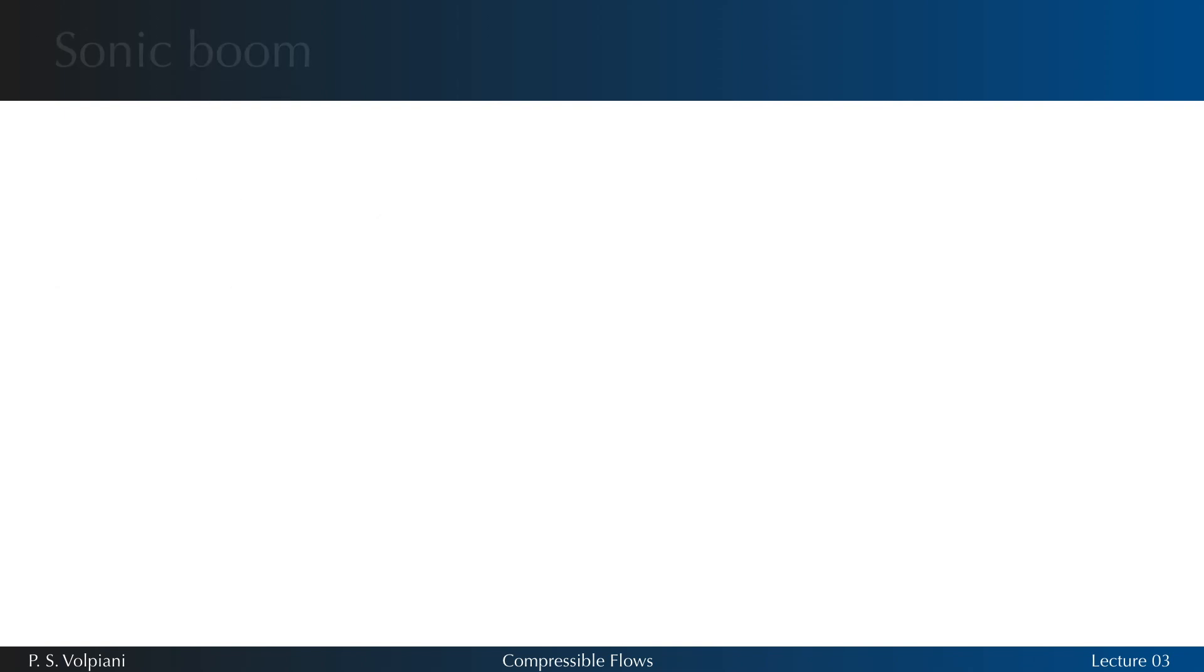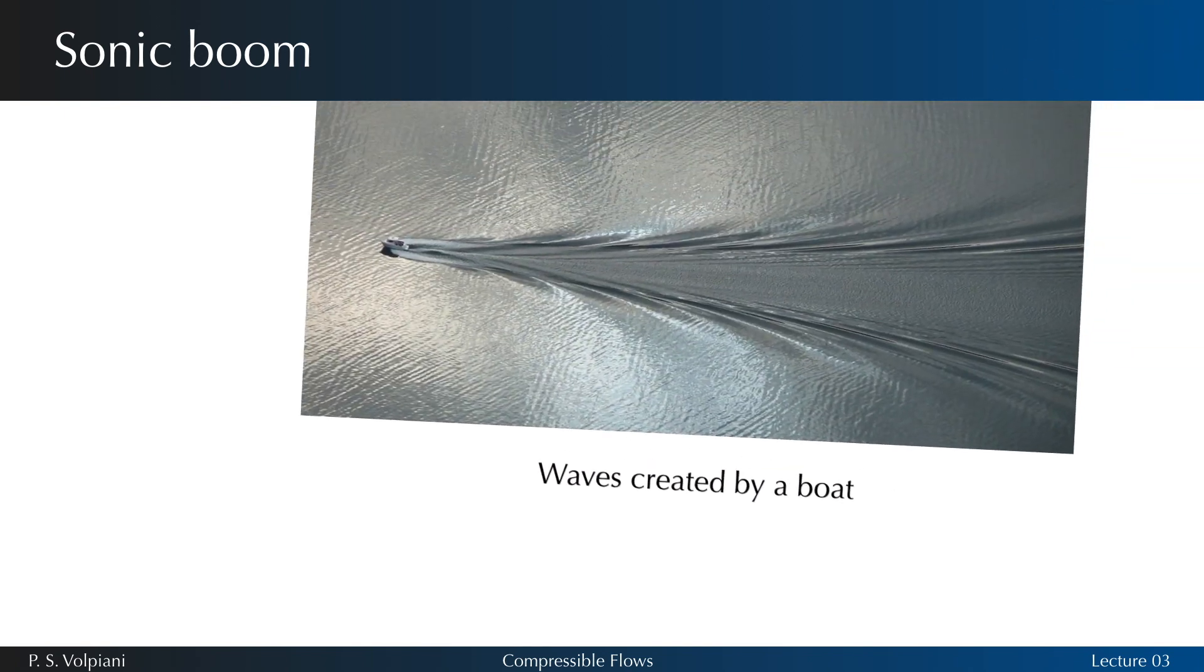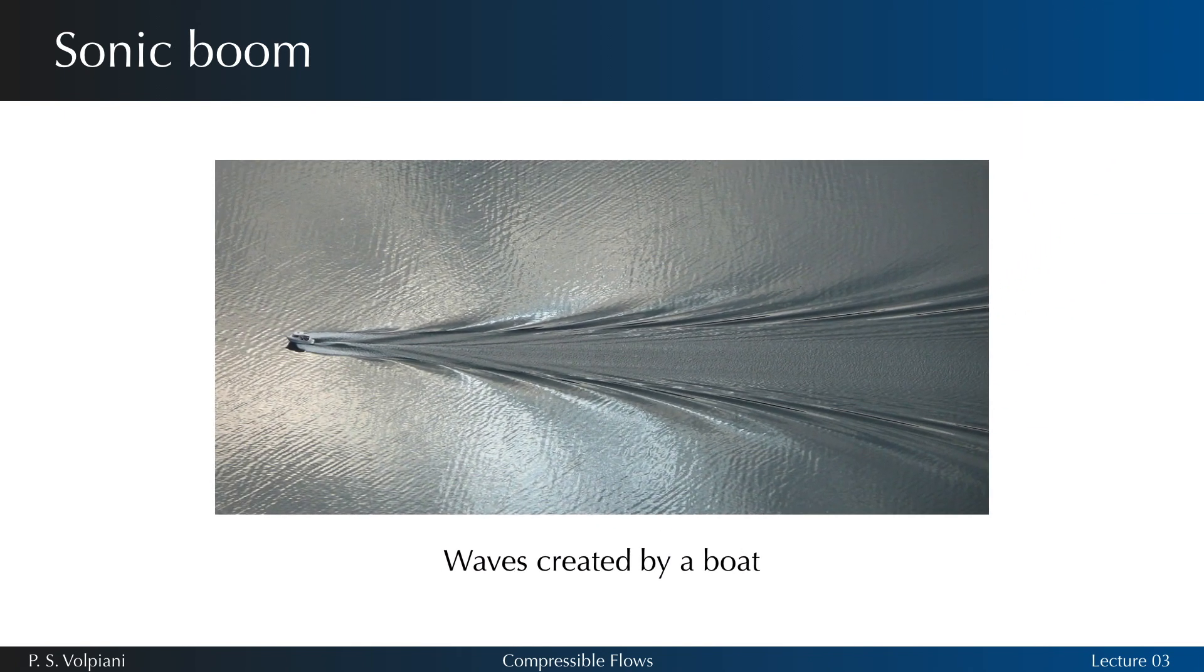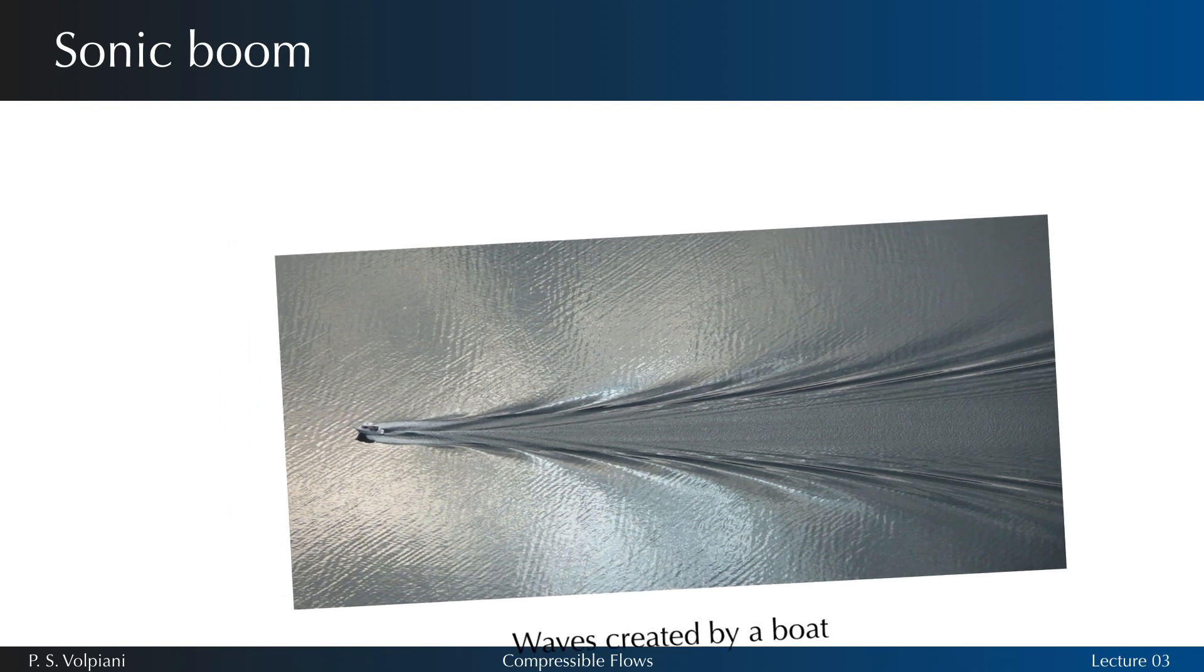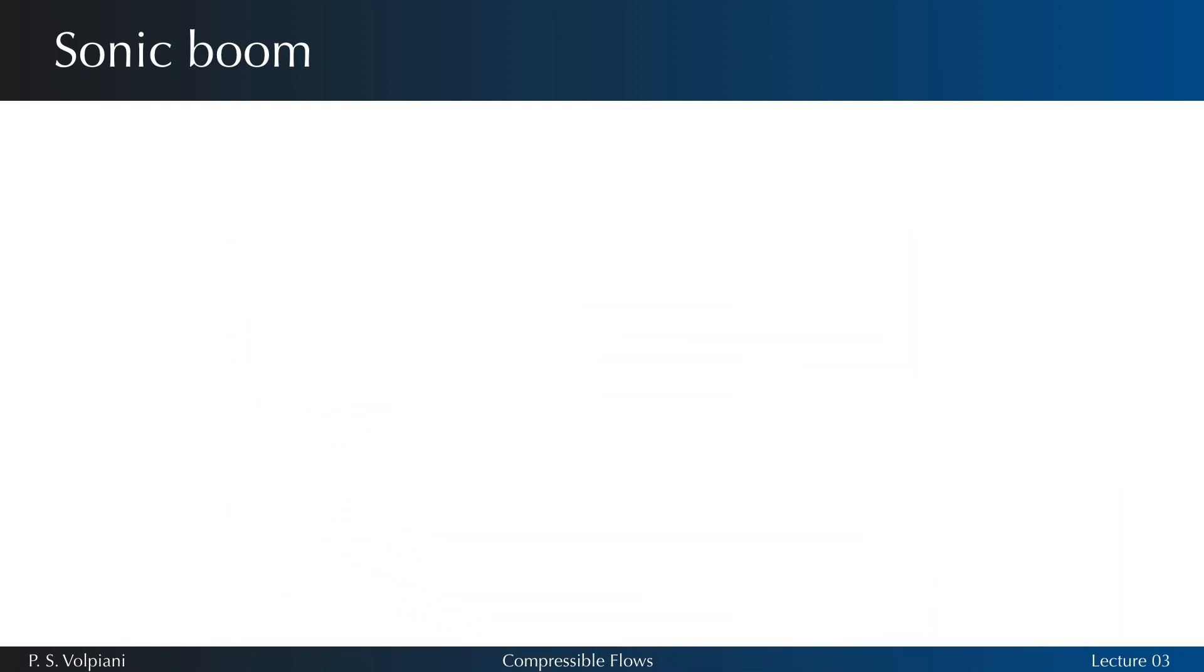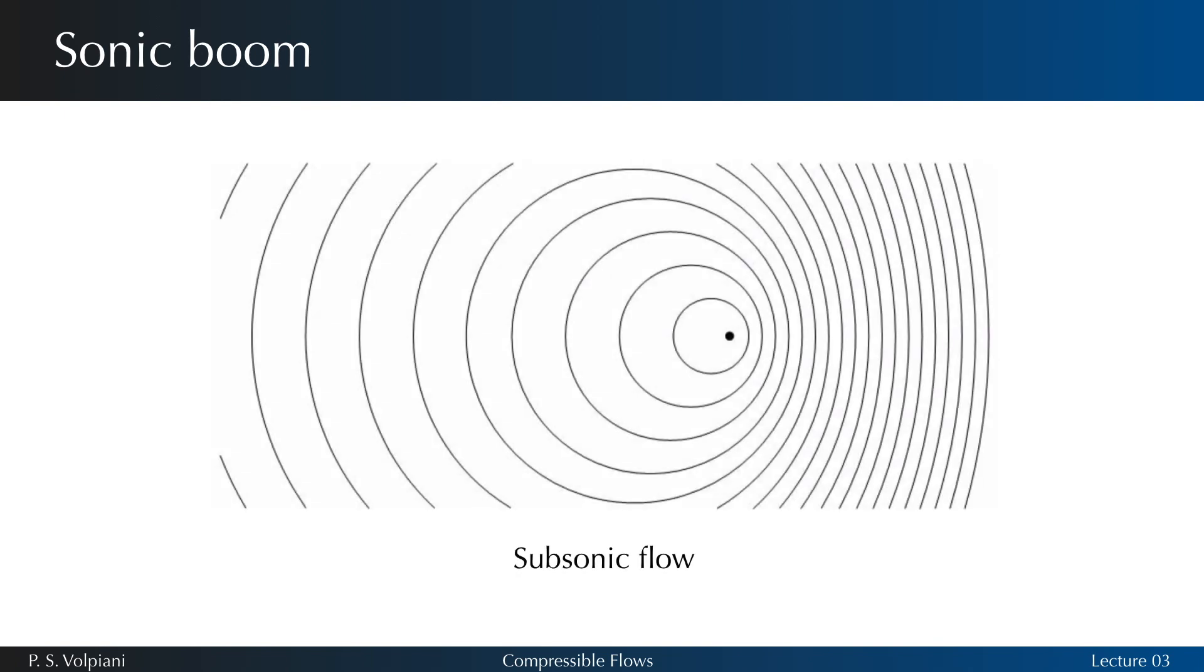Let's now talk about sonic boom. When an aircraft travels through air, it creates a series of pressure waves in front of the aircraft and behind it, similar to the bow and stern waves created by a boat. These waves travel at the speed of sound, and as the speed of the object increases, the waves are forced together or compressed because they cannot get out of each other's way quickly enough.